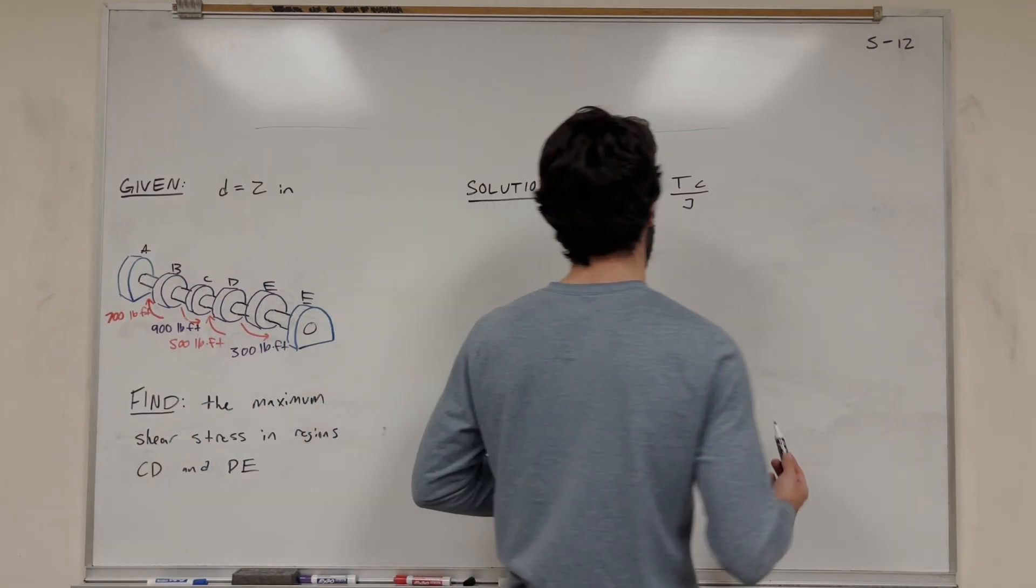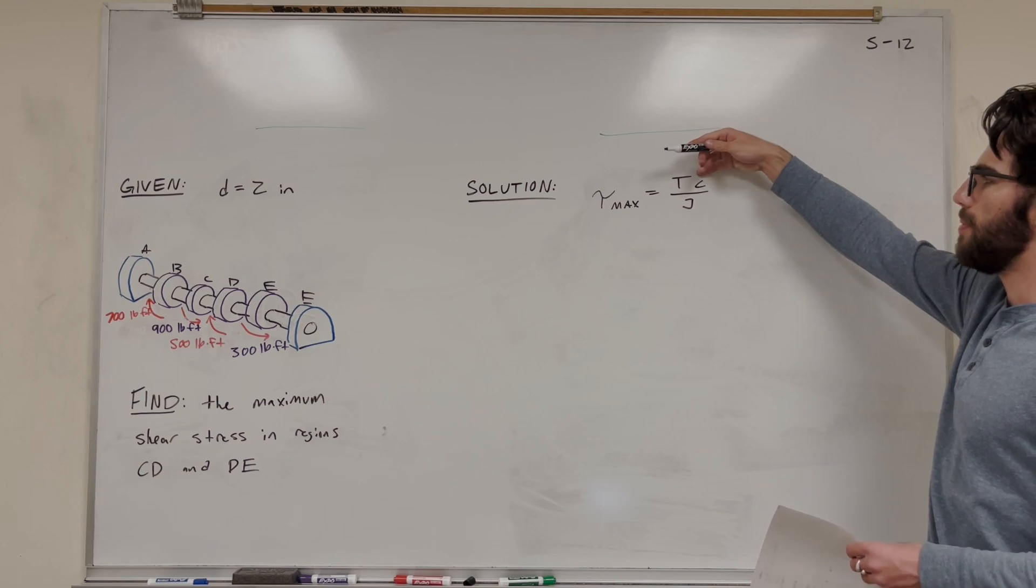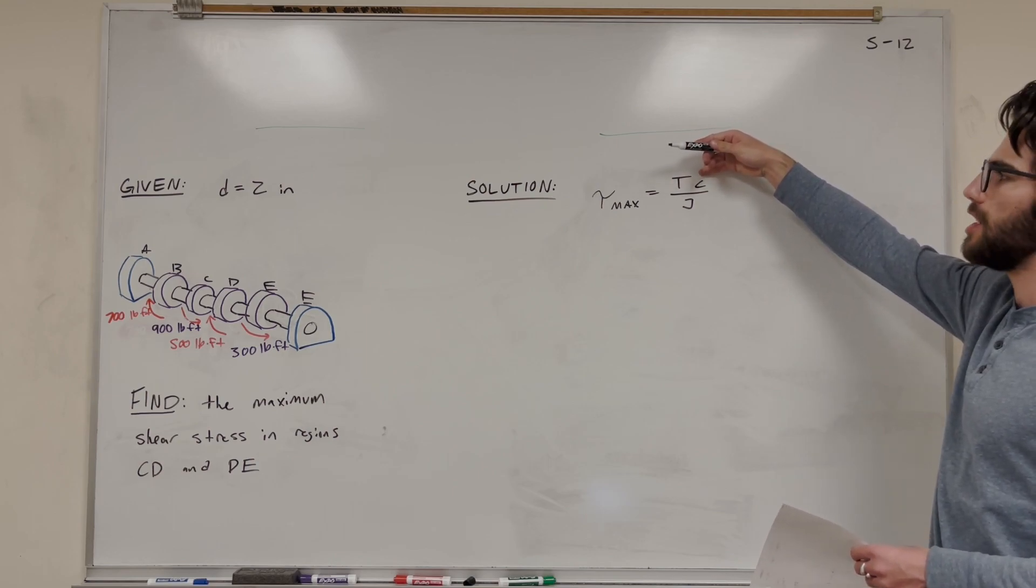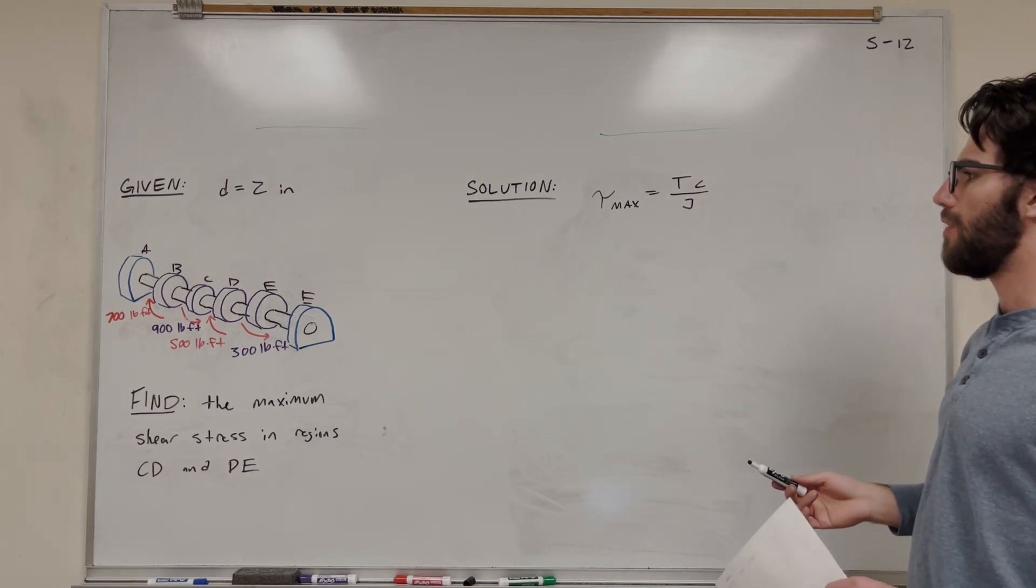So let's go ahead and solve for that. The equation we're going to be using is maximum shear stress is equal to the torque in each section, times the radius, divided by the polar moment of inertia. So we're going to need to solve for these things.